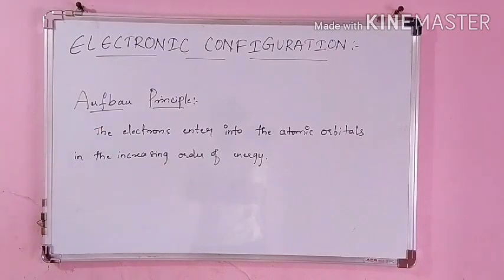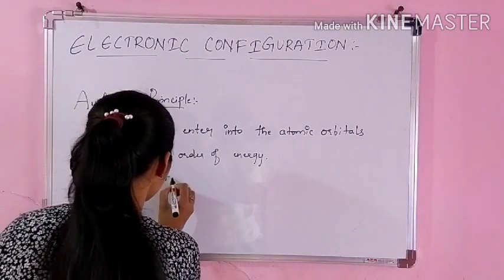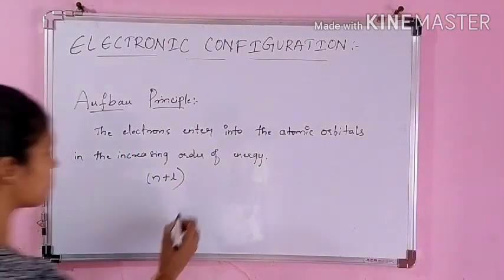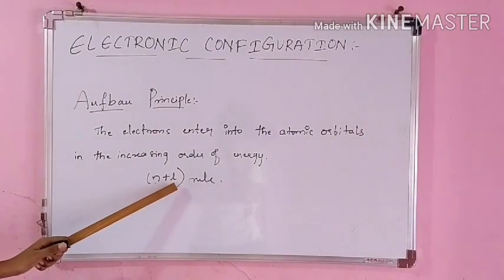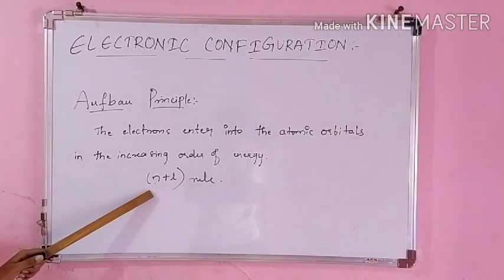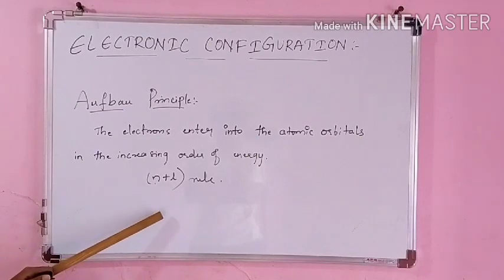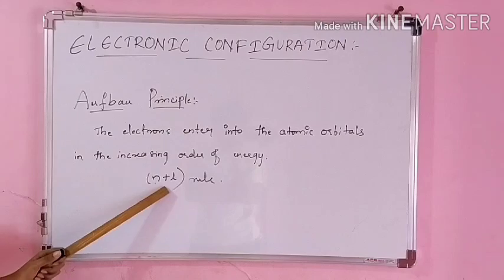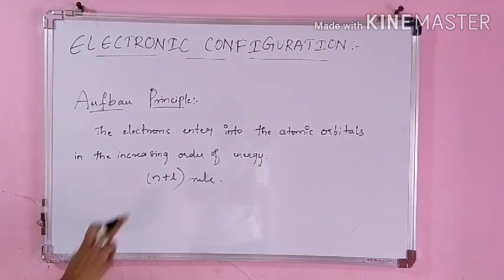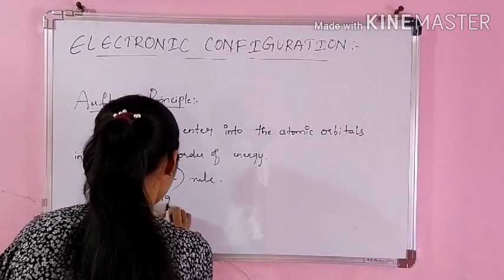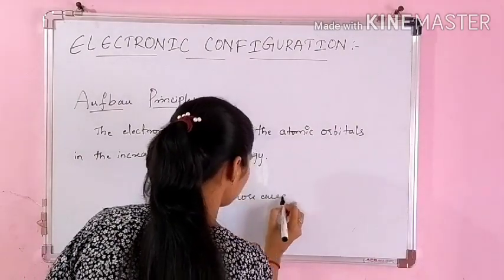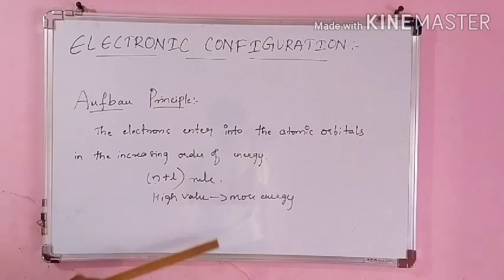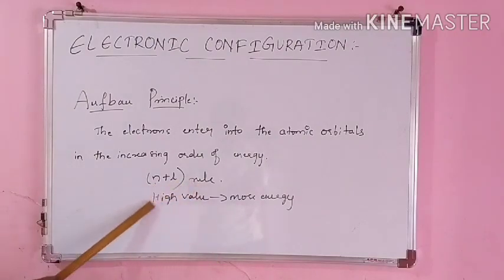According to this, how to determine the increasing order of the energy: we use the n plus l rule. Here n is your principal quantum number and l is your azimuthal quantum number. By applying this, you get the value. For two orbitals given, find the n plus l value — if one orbital has a higher value, it has more energy; if it has a lower value, it has less energy. Using the n plus l rule, we compare them.